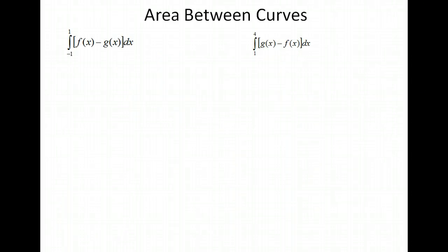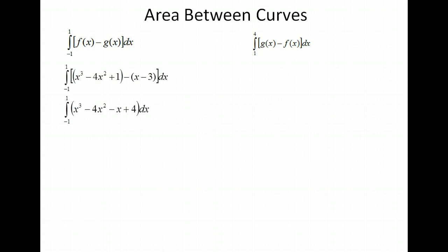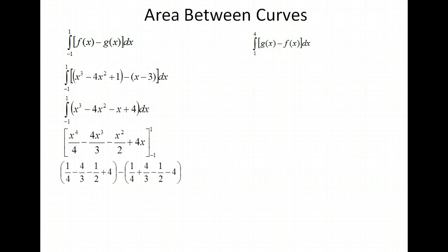Now we need to integrate. We have the interval from negative 1 to 1, with our f of x function minus our g of x function. We're just going to simplify that and do our integration. So we have x to the 4th over 4, minus 4x to the 3rd over 3, minus x squared over 2, plus 4x. We're going to plug in our endpoints of integration of 1 and negative 1, and then simplify our fractions, so we get 16 thirds.